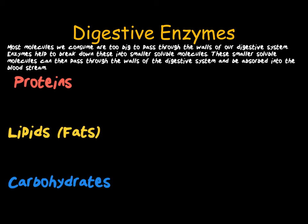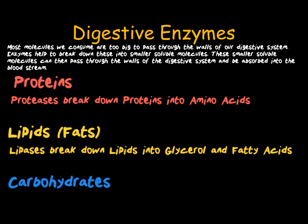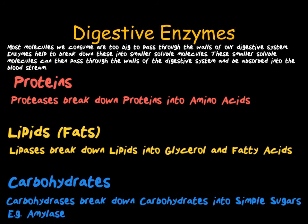Enzymes do a similar job in plants, where plants store energy in the form of starch — a carbohydrate — and need to break that down to carry out respiration and transfer energy they can use to grow. Proteins are broken down by proteases into amino acids. Lipids are converted by lipases into glycerol and fatty acids. And carbohydrases break down carbohydrates into simple sugars. Amylase, which we looked at earlier, is an example of a carbohydrase.